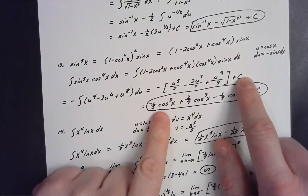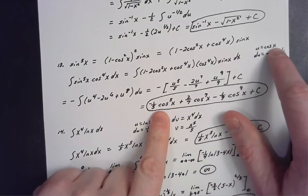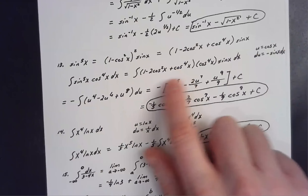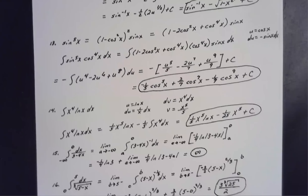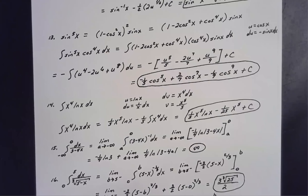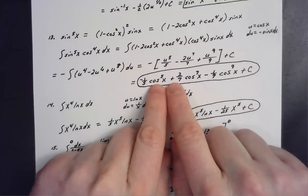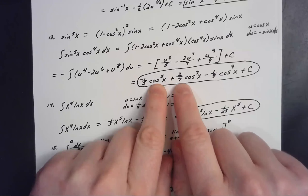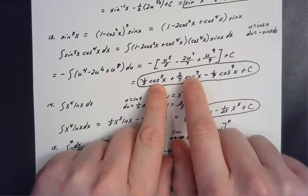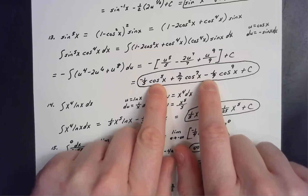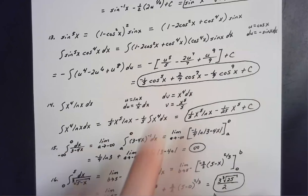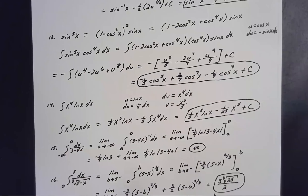Substituting cos x back in for u and distributing the negative, the final answer is: −1/5 cos⁵x + 2/7 cos⁷x − 1/9 cos⁹x + C.